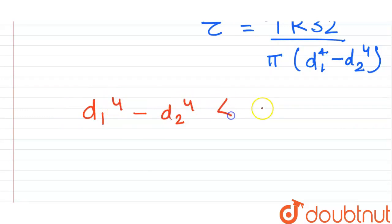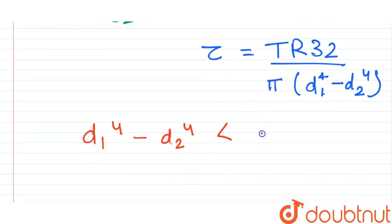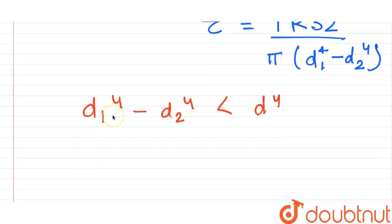All right, and from this expression we know that d1 raised to the power 4 minus d2 raised to the power 4 is less than d1 raised to the power 4, because in this case we are taking just the outer ring, and in this case we are subtracting the inner ring as well.